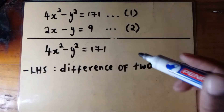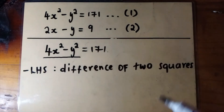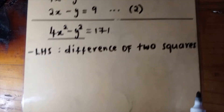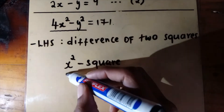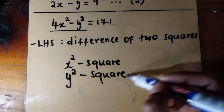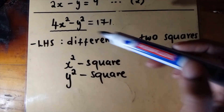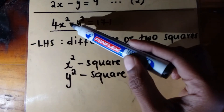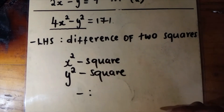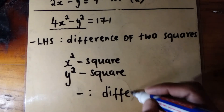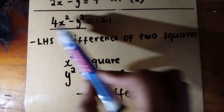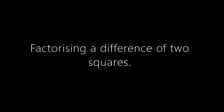If we take a look at equation 1, we can see that the left hand side is a difference of two squares. Any number, for example x, raised to the exponent 2 is called a square, and similarly y raised to the exponent 2 is called a square. The operation between these two squares is a minus, and when we subtract two numbers the answer is called a difference — hence the term 'difference of two squares'.